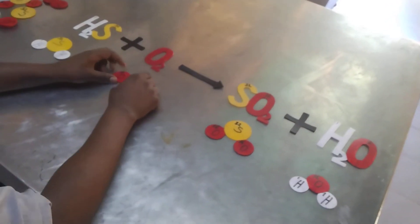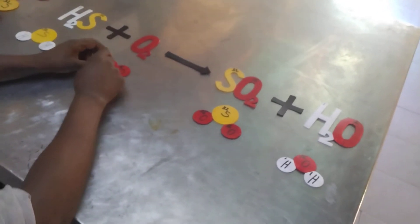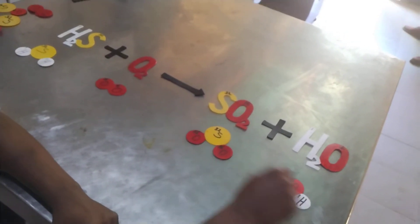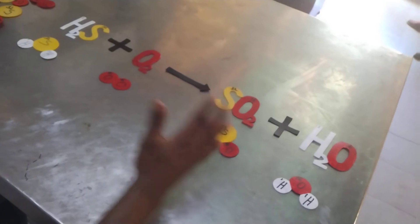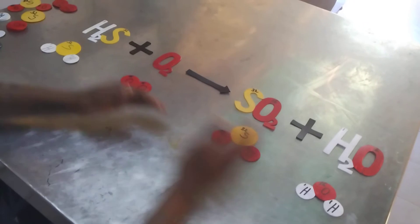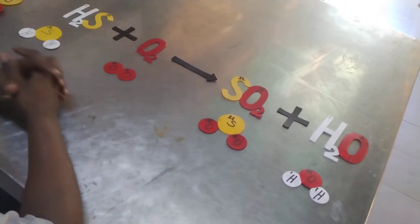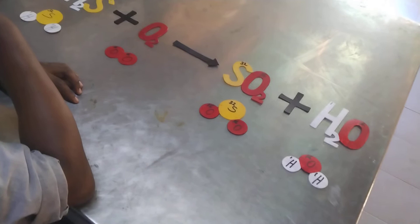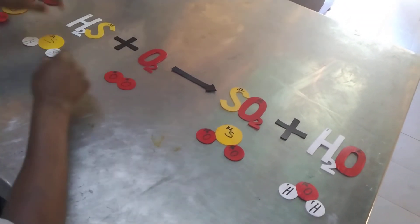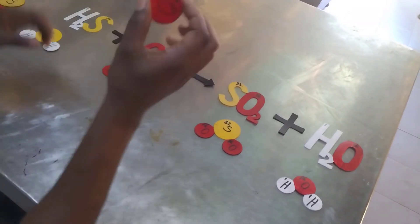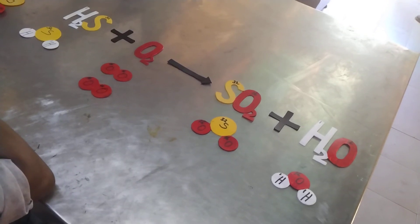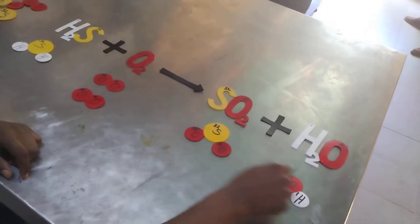Now let us consider oxygen. We have two oxygen atoms on the reactant side, but on the product side we have three — so oxygen atoms are not balanced. We need to increase the number of oxygen atoms on the reactant side. We add one molecule of oxygen, giving us four oxygen atoms on the reactant side, but only three on the product side.